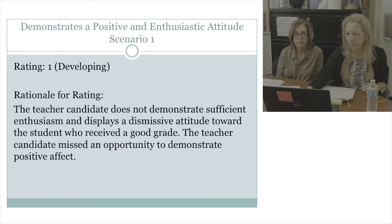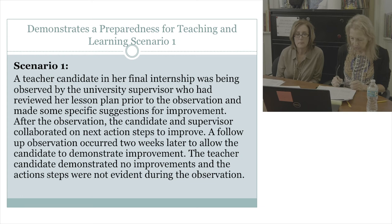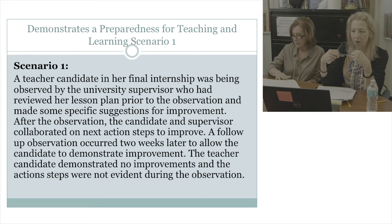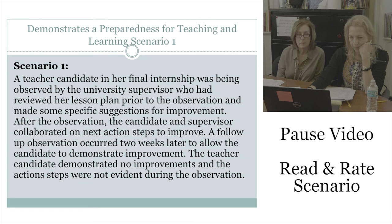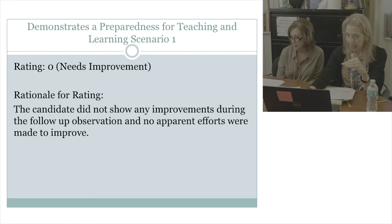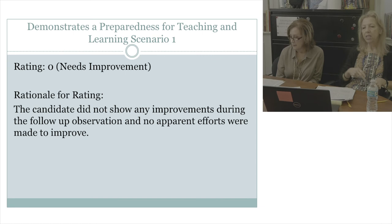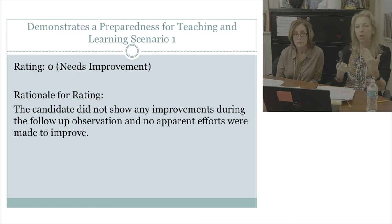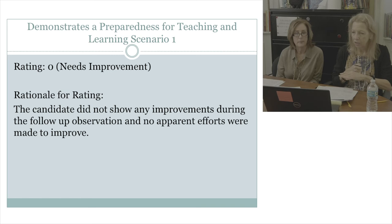This next scenario takes place in a clinical setting and is a little bit longer. We gave this a needs improvement. The student was sitting in the meeting and wasn't belligerent — she sat and listened, but she did not implement. Sometimes just the ability to sit there is nice, but you have to be able to follow through with the suggestions given. That's why this got a needs improvement — there was absolutely no improvement shown during the observation. If a student doesn't have the ability to make those improvements, look into the tool and they would definitely be marked needs improvement. You need to do some type of intervention.